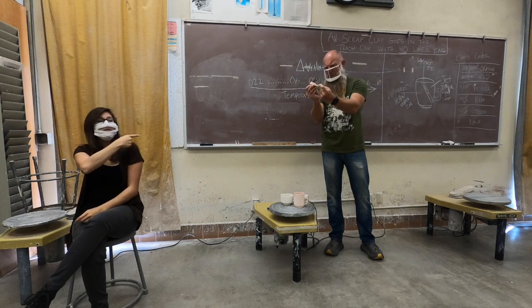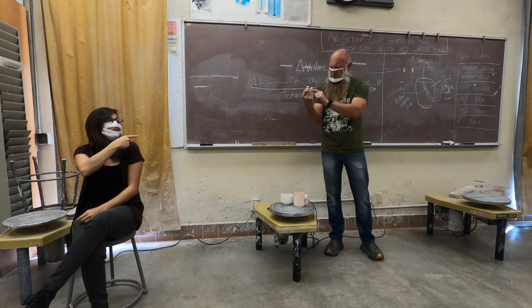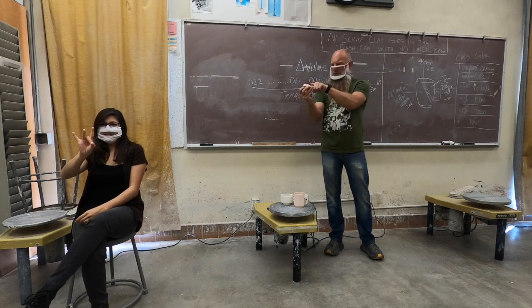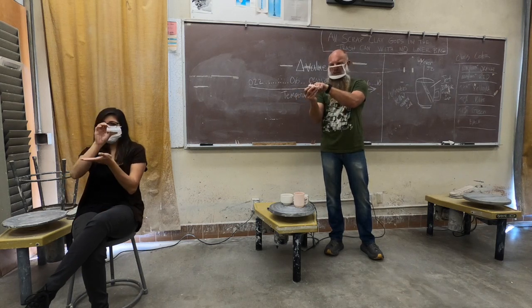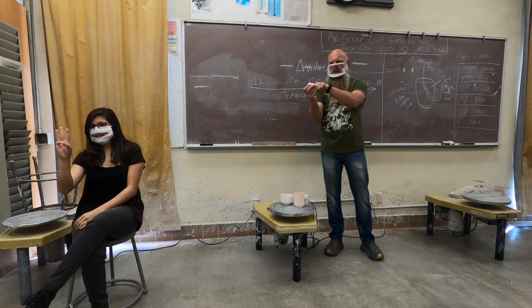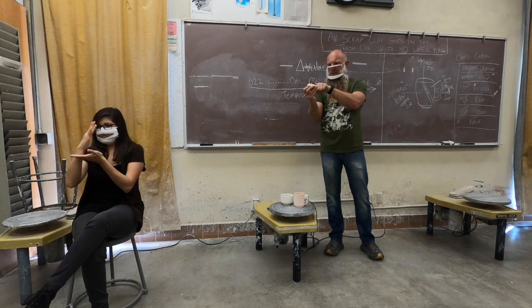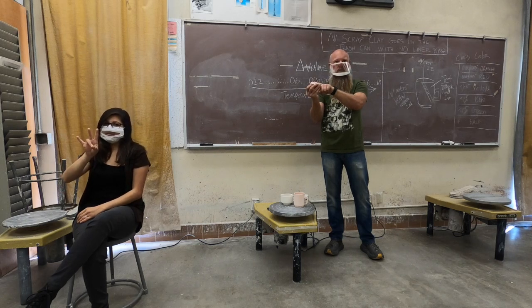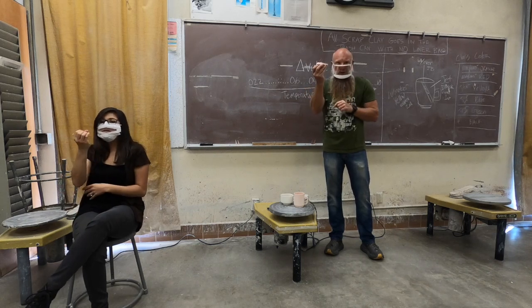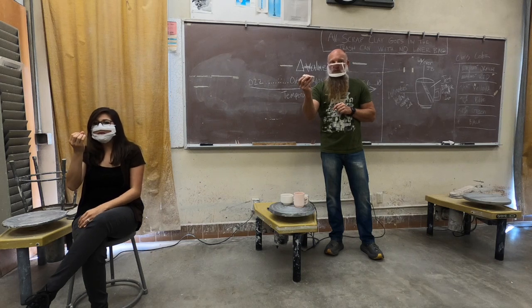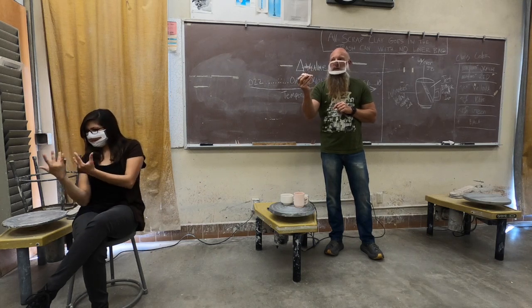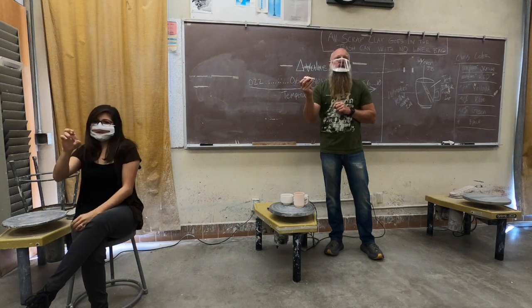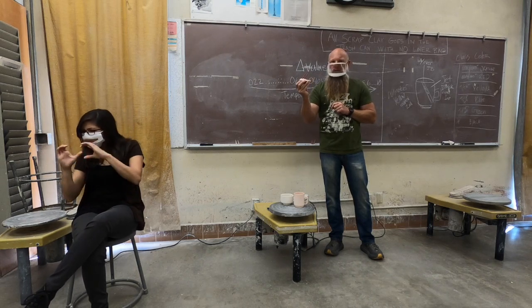You can see that this first one is melted all the way down into this little cup. And this one is starting to bend over. This right here is cone, let's see, what did I put in here? I think that's cone 08. Yeah, cone 08. This is cone 07. This is cone 06. So this did not get to cone 06, right? It barely got to cone 07, definitely got to cone 08, right?